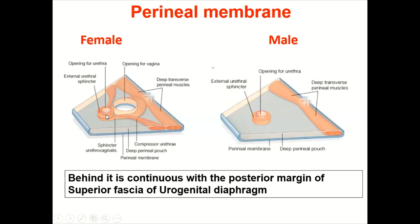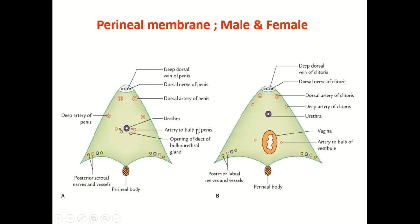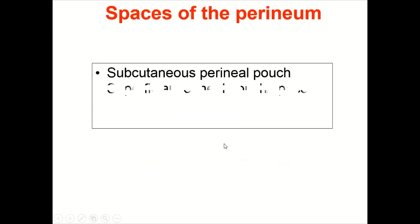Comparing the perineal membrane in male and female: in males there is only a urethral opening; in females there are openings for both the urethra and vagina. Posterolaterally the membrane has openings for posterior scrotal or posterior labial nerves and vessels. Laterally are openings for the deep artery of the penis or clitoris, dorsal artery of the penis or clitoris, and by the side of the urethra, the artery of the bulb of the penis or vestibule. An important difference: in males, the duct of the bulbourethral gland opens here as bulbourethral glands are in the deep pouch; in females, the greater vestibular gland is in the superficial perineal pouch.